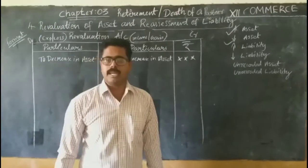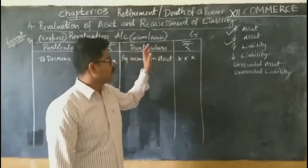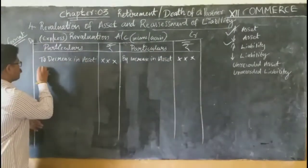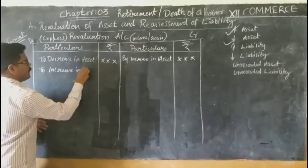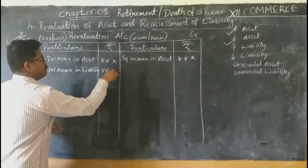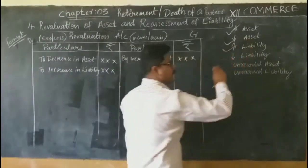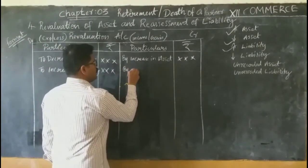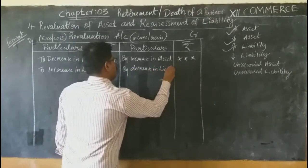The next case is increase in liability. If a liability increases, it is a loss to the organization, so it will be debited in the revaluation account. When a liability decreases, it is a gain to the organization, so it will be credited — recorded as 'by decreasing liability'.